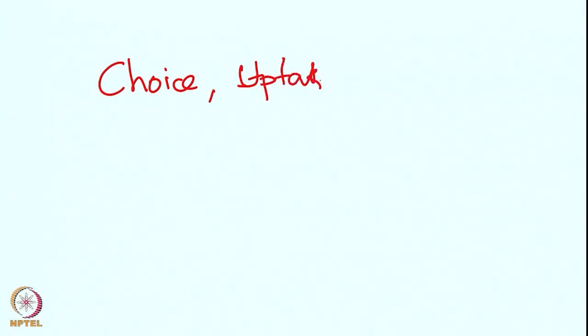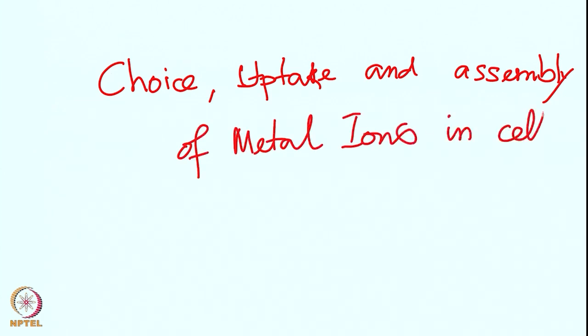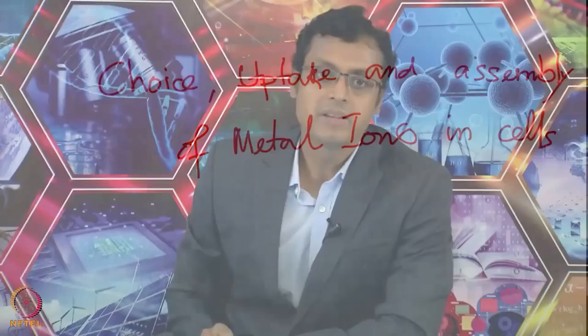Hello, welcome everyone to the second class of metals in biology. Today we will discuss choice, uptake and assembly of metal ions in cells. Let us first discuss the principle of this topic: choice, uptake and assembly of metal ions in cell.